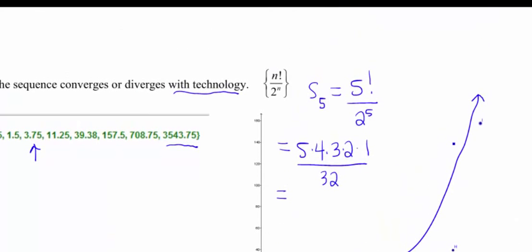So anyway, hopefully you guys can see this function is going to grow crazy fast. Our denominator's growing pretty big too, right? It's an exponential function. But the problem is that numerator, that factorial, it's growing way, way faster. That's actually one of the fastest growing functions that you could come up with.